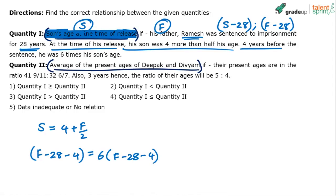So these are the 2 equations. Solve the 2 equations to get the answer. Ages at the time of release are S and F; at the time of sentencing, S-28 and F-28; and 4 years before sentencing, S-32 and F-32.